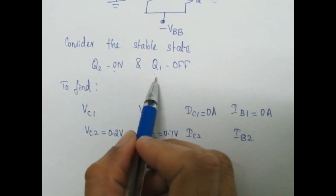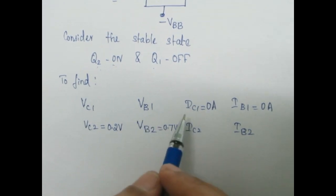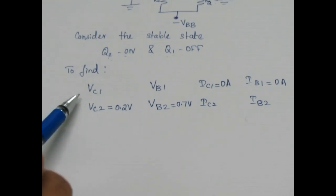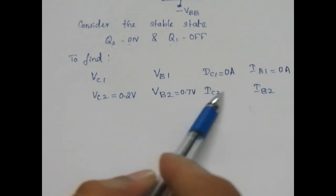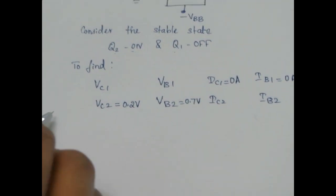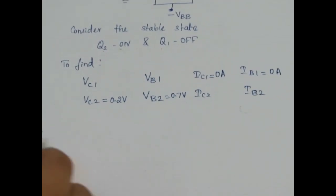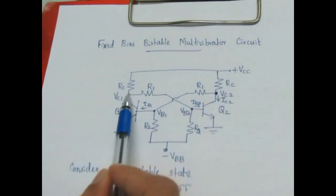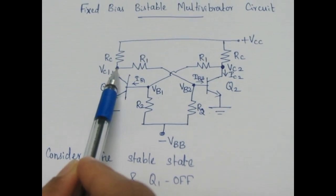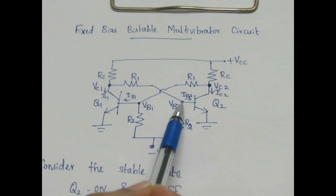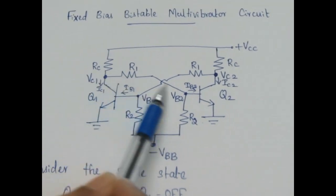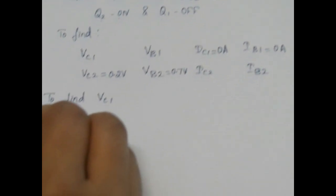If Q1 is ON, its collector voltage and base voltage are equal to the saturation voltages. So for any stable state condition, four out of eight parameters can be written directly. To find the other stable state voltages and currents — that is VC1, VB1, IC2, and IB2 — we have to apply various network theorems. We will mainly use the voltage divider rule, superposition theorem, and KCL. To find VC1, VCC is known and VB2 is known.